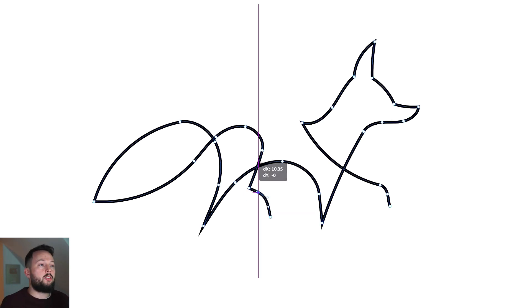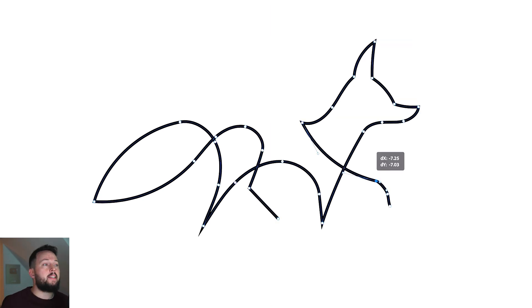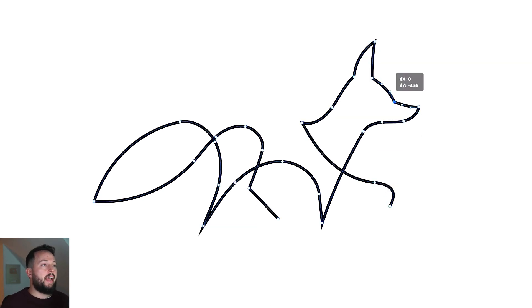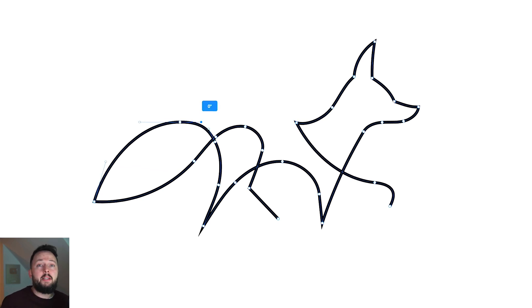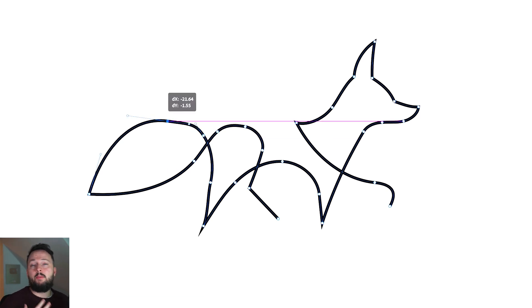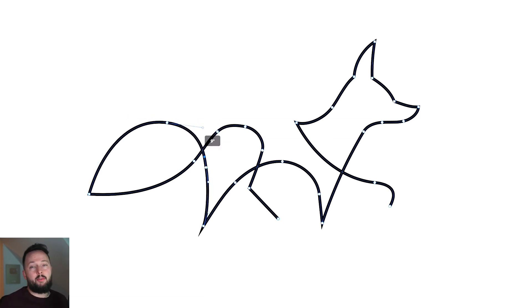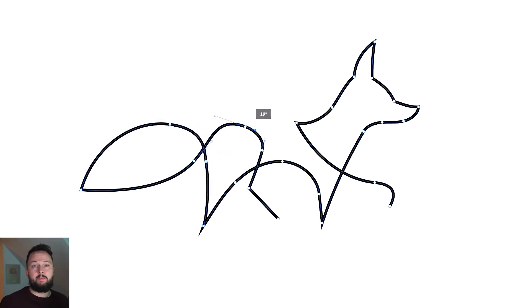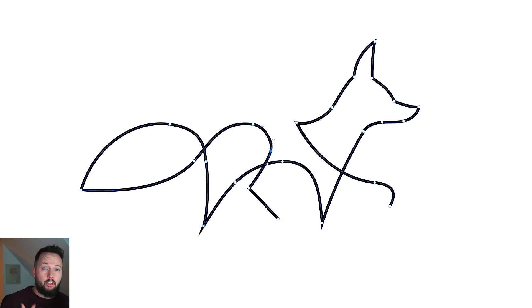I just have to switch to the edit mode and I can remove anchor points that I don't need. I can refine the ones that I have, and it's very similar to the desktop experience, but I would say it's much easier using touch gestures and the Apple Pencil. There is also a smoothness option with which you can adjust the automatic refinement of your lines.